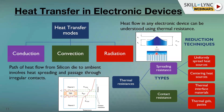Thermal solutions include heat spreaders, which have anisotropic thermal conductivity — higher planar conductivity and lower z-conductivity — which reduces thermal resistance and spreads heat uniformly. Additionally, spreading resistance increases if heat sources are placed at uncomfortable locations like corners. To minimize spreading resistance in electronic devices, you should uniformly spread the heat sources and try to center them as much as possible.